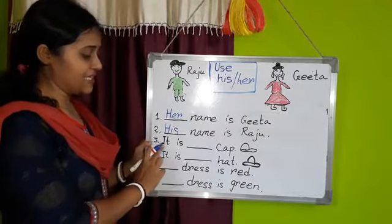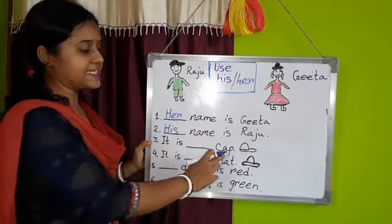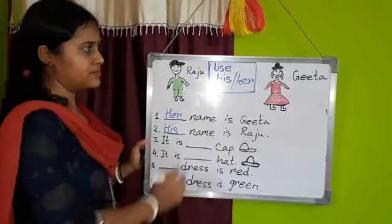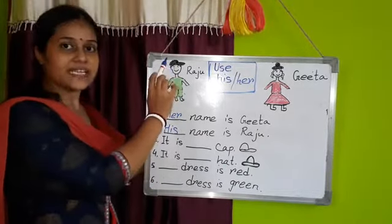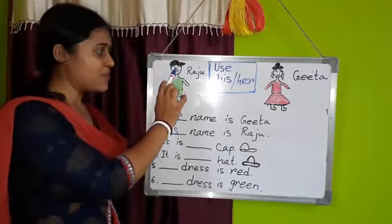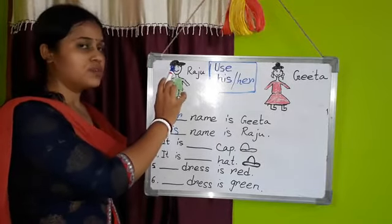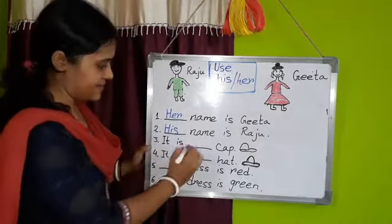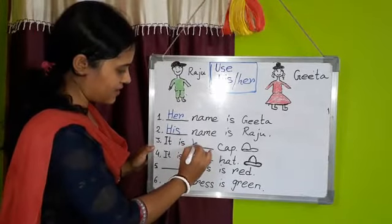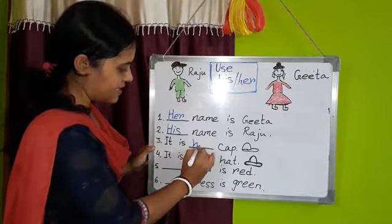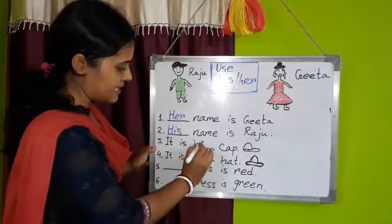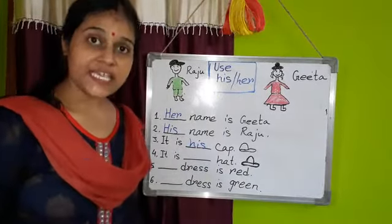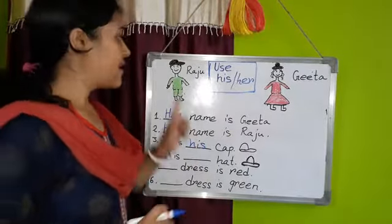Next, number three. It is his cap. Whose cap? Who is wearing a cap? Yes, Raju. Raju is wearing a cap, so it is his cap. Raju is a boy, so we write his here. It is his cap.